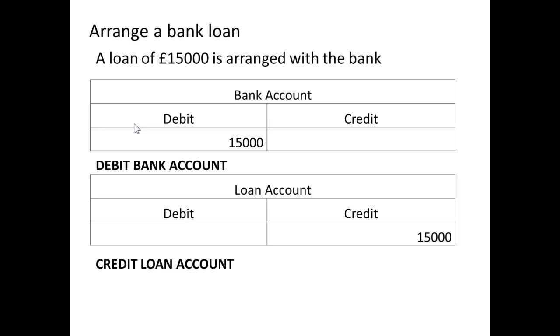If we arrange a bank loan, we will debit the bank account, because we increase the asset of bank with the money that we've received for the loan, and we will credit the loan account, which is a liability.